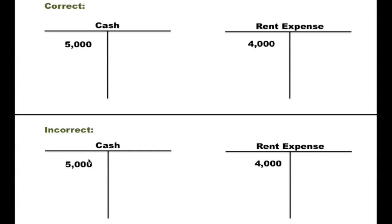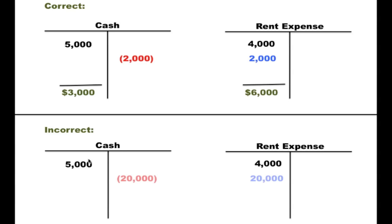If we look at the T-account for both cash and rent expense, we can visualize how this error has affected those accounts. If we pretend that there was $5,000 in the cash account and $4,000 in the accumulated rent expense account, the correct credit to cash would reduce that balance to $3,000, whereas the correct debit to rent expense would increase that account to $6,000. However, since $20,000 was credited and debited to these accounts instead of the correct $2,000, the cash account now has a negative $15,000 balance — much lower than it should be — and the rent expense account has a $24,000 balance, which is much higher than it should be. It's clear that cash is understated while rent expense is overstated.